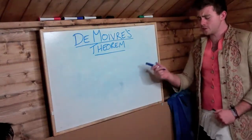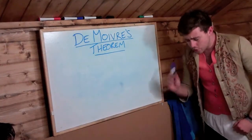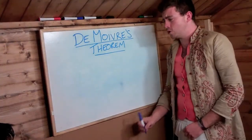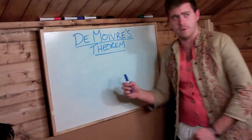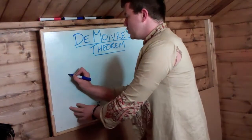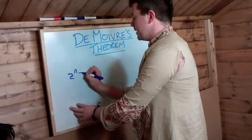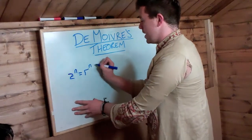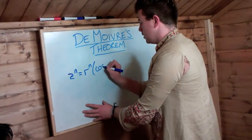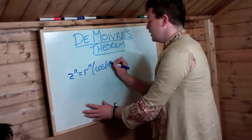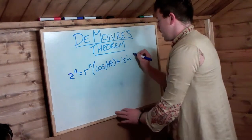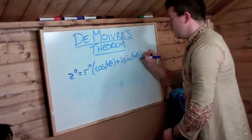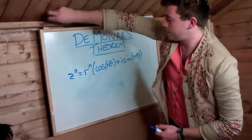In the previous board, I showed you how to square the complex number z. Now I'm going to show you the more general rule, which is de Moivre's theorem. Now, for any integer n, z to the n is equal to r to the n cos n theta plus i sine n theta. Now this is de Moivre's theorem.